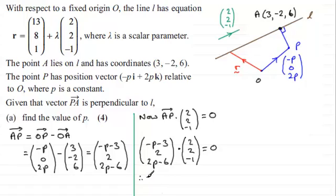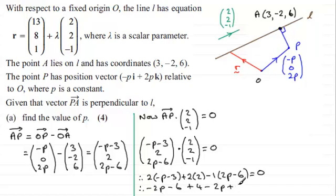So therefore, we've got 2 times (-p - 3), plus 2 times 2, plus negative 1 times (2p - 6). I'll just write that as -1 times (2p - 6). And that should equal 0. And if we expand these brackets, we get -2p - 6 + 4 - 2p + 6 equals 0.